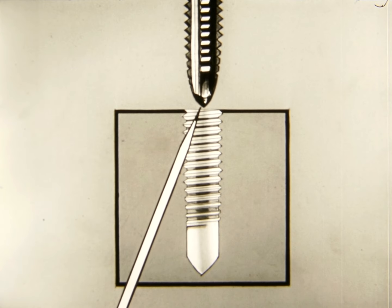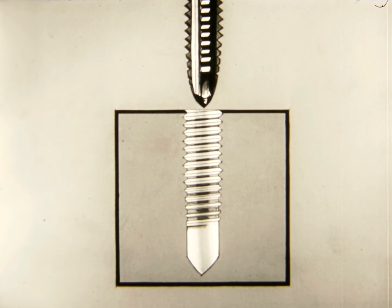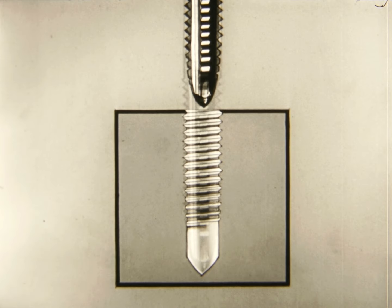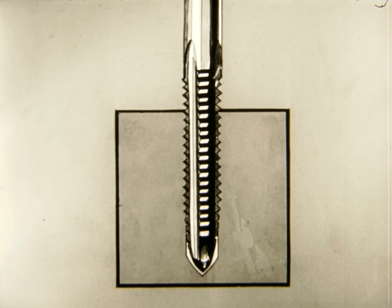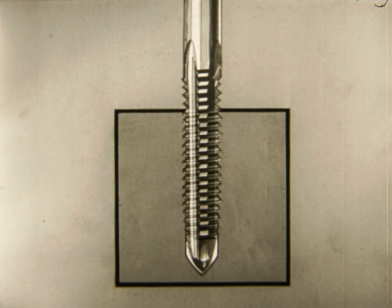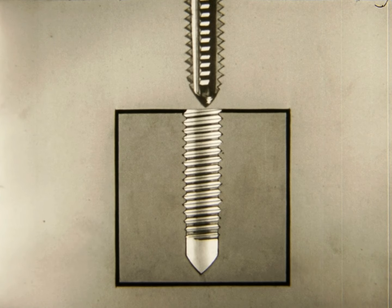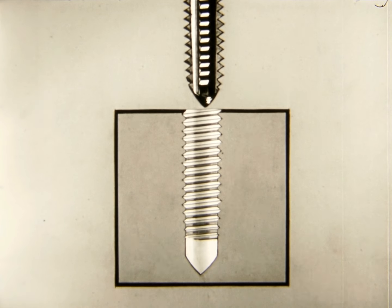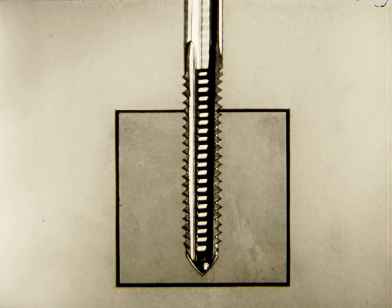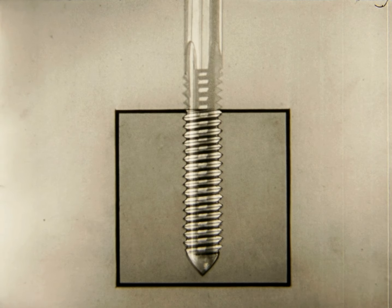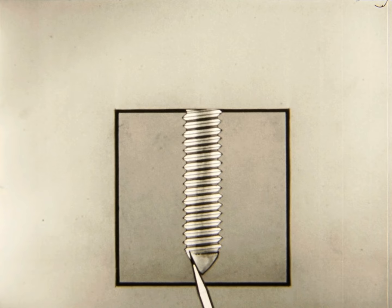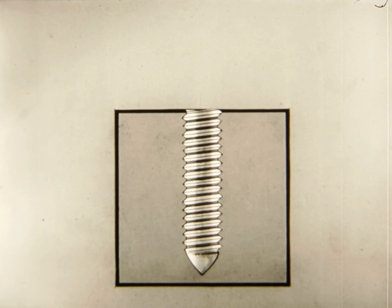On the plug tap, the threads start at the tip, with a sharp taper to full size. This tap is used as the second tap to follow and deepen the threads started by the taper tap. The bottoming or finishing tap is necessary to complete the threads to the bottom of this blind hole. This third tap is not always used.